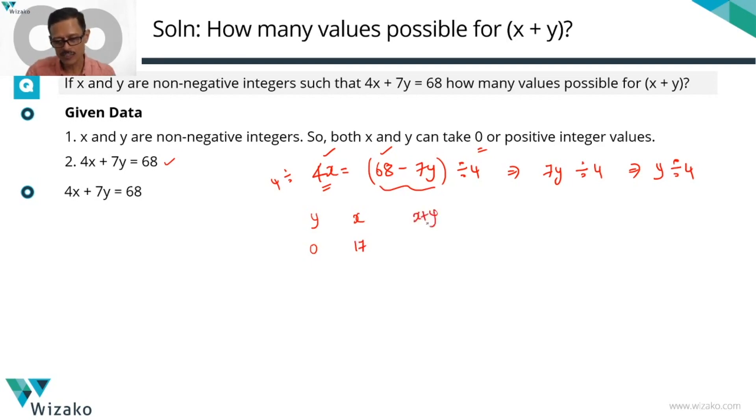I'm going to quickly compute the value of x plus y and write it side by side because we're looking for how many different values can x plus y take. The next value that y will take because y is divisible by 4 - you can jump quickly to 4. So either 0 or a positive integer. Plug in the value of y as 4. 7 times 4, 28. 68 minus 28 is 40. 4x equals 40. x is equal to 10. So that makes x plus y to be 14.